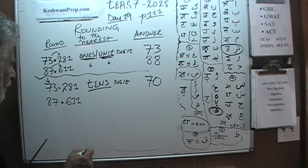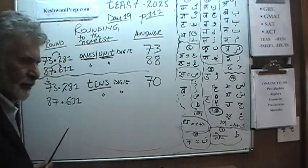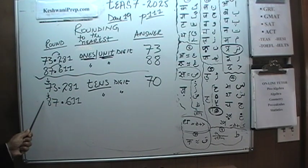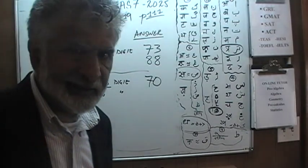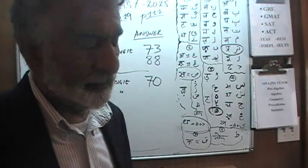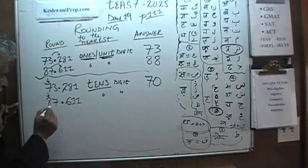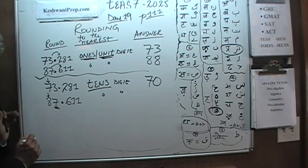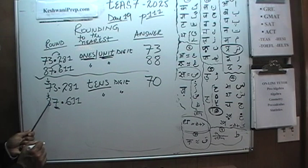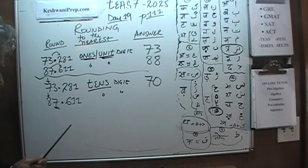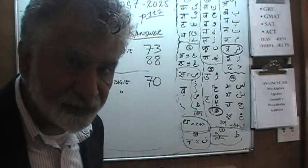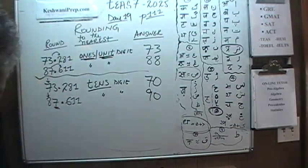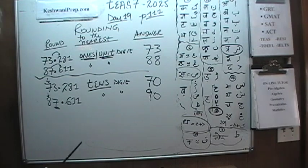Again, we are going to round 87.611 to the nearest tens digit. The tens digit is 8. 87 is made up of 8 tens and 7 ones. The digit after the tens digit is 7, which is more than 5. So 87.611, when rounded to the nearest tens, becomes 90.